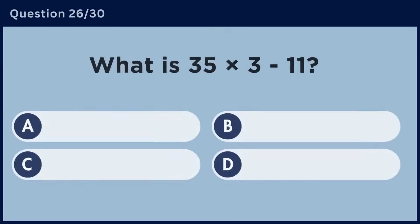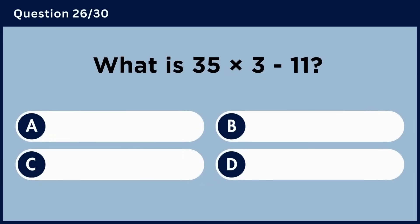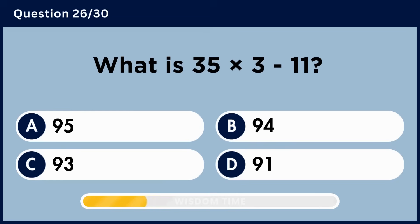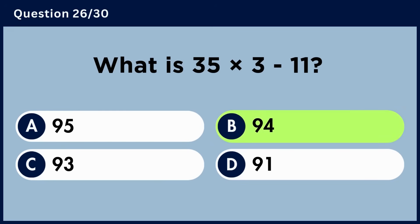What is 35 multiplied by 3 minus 11? Answer B: 94.